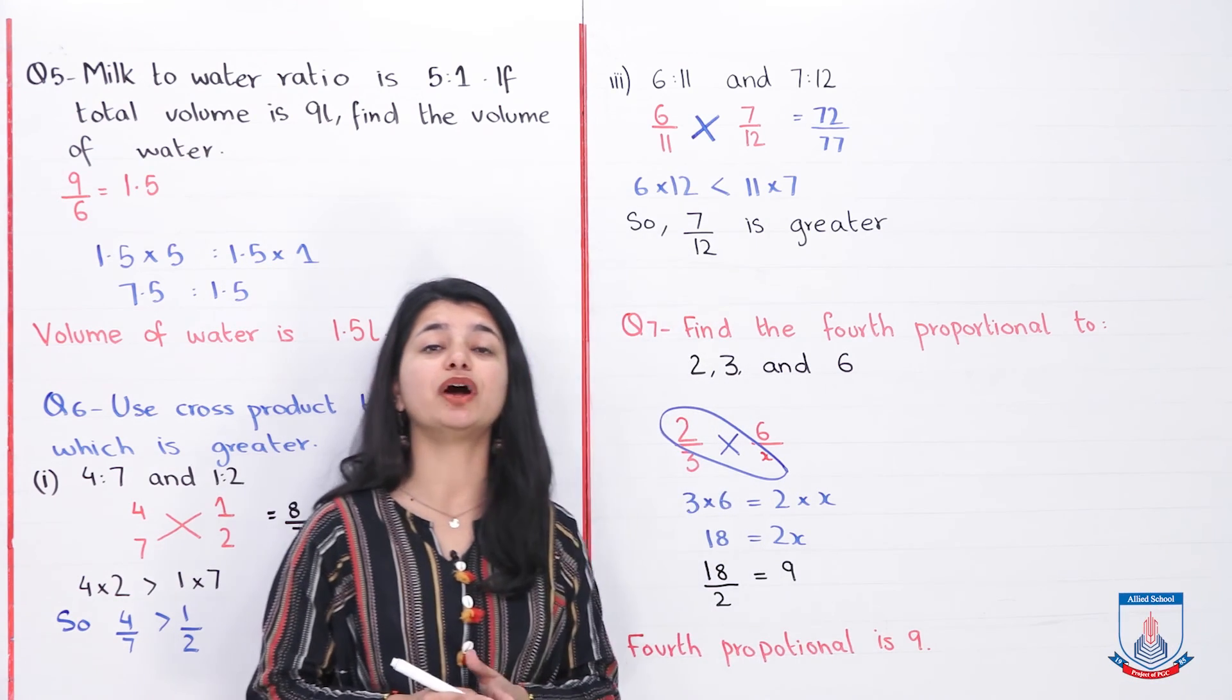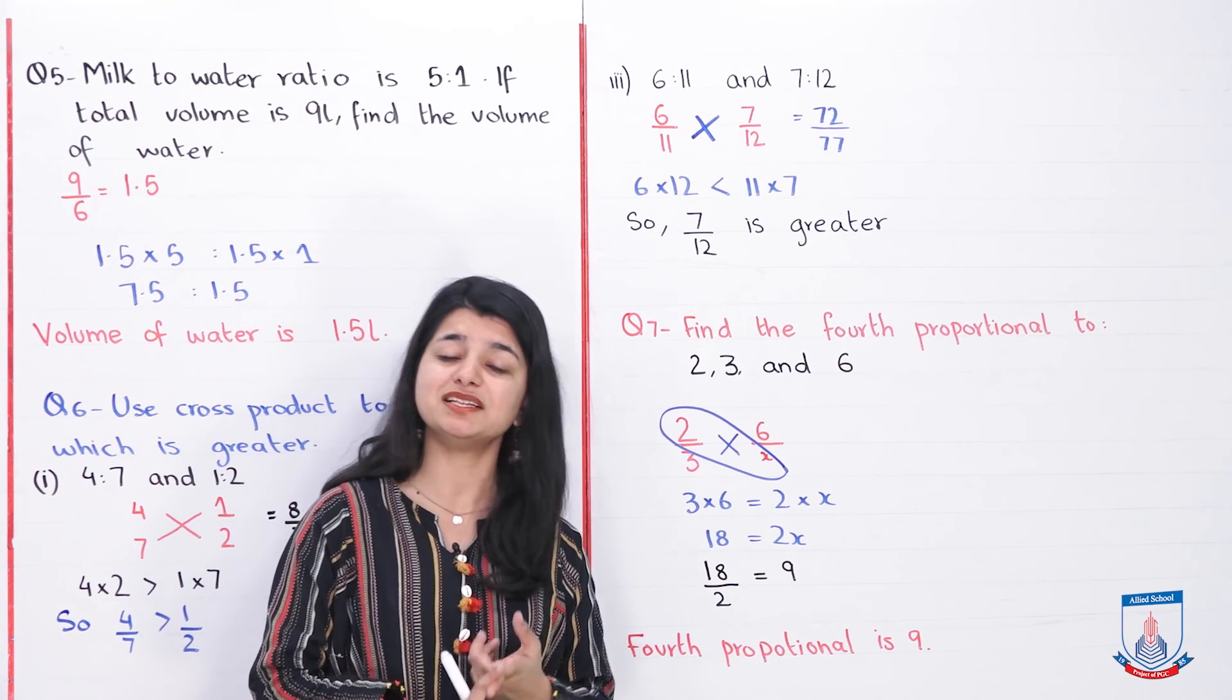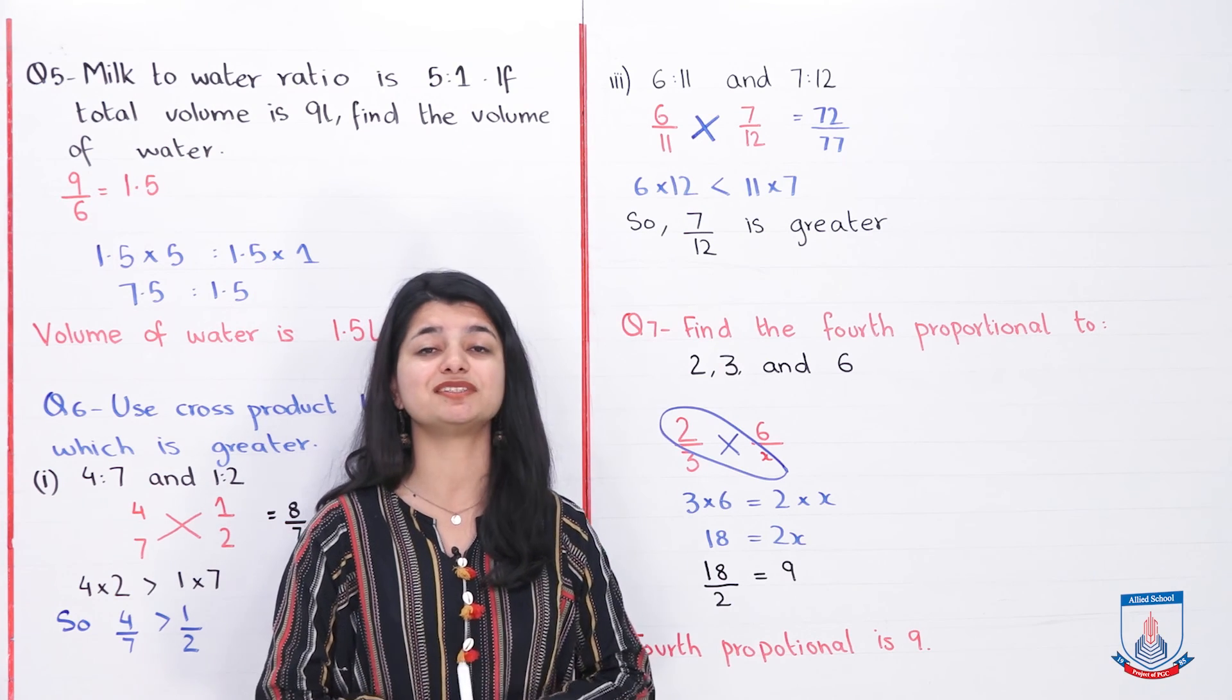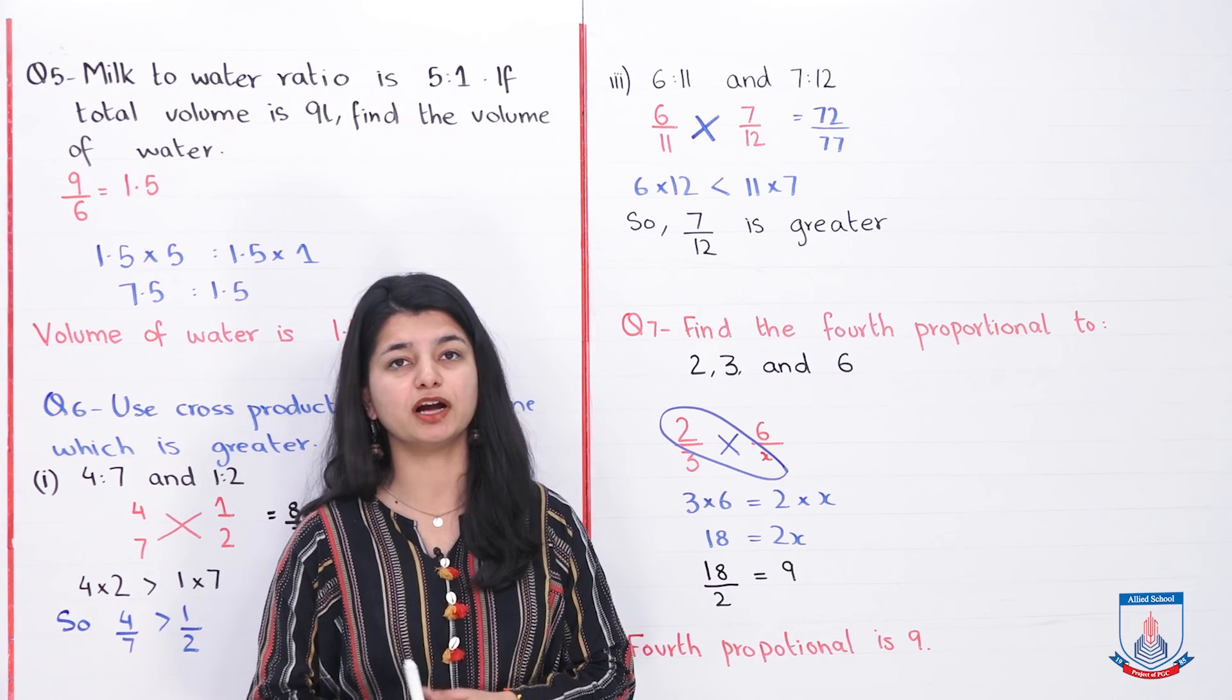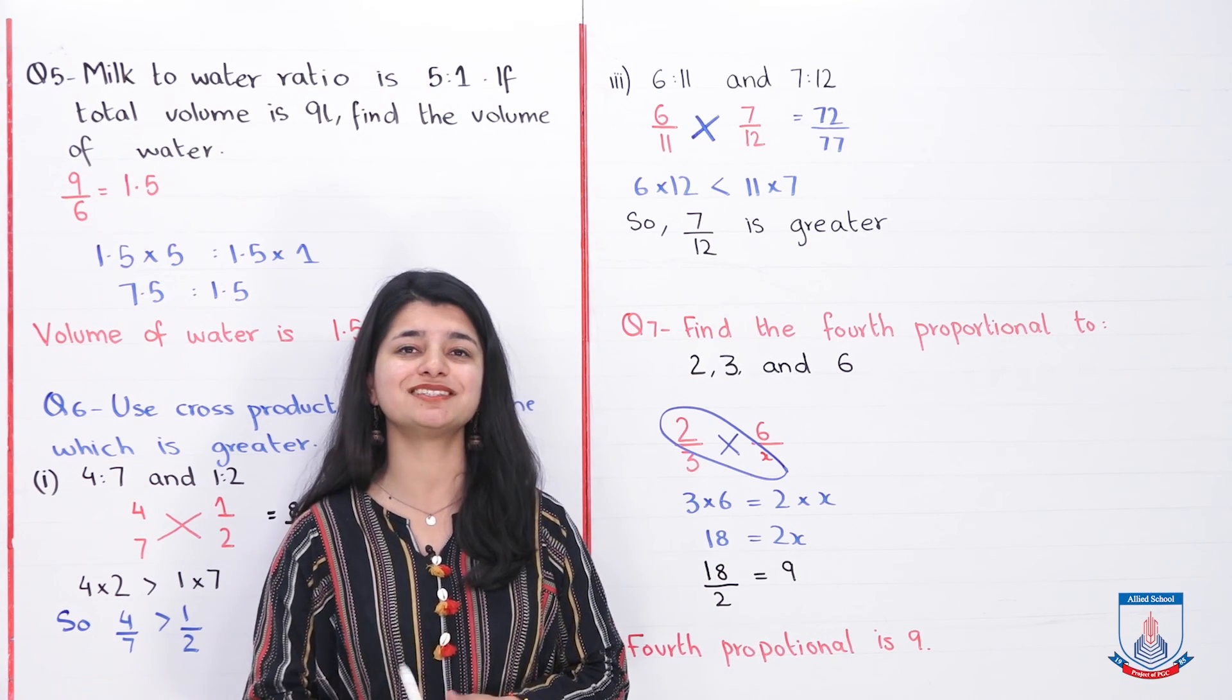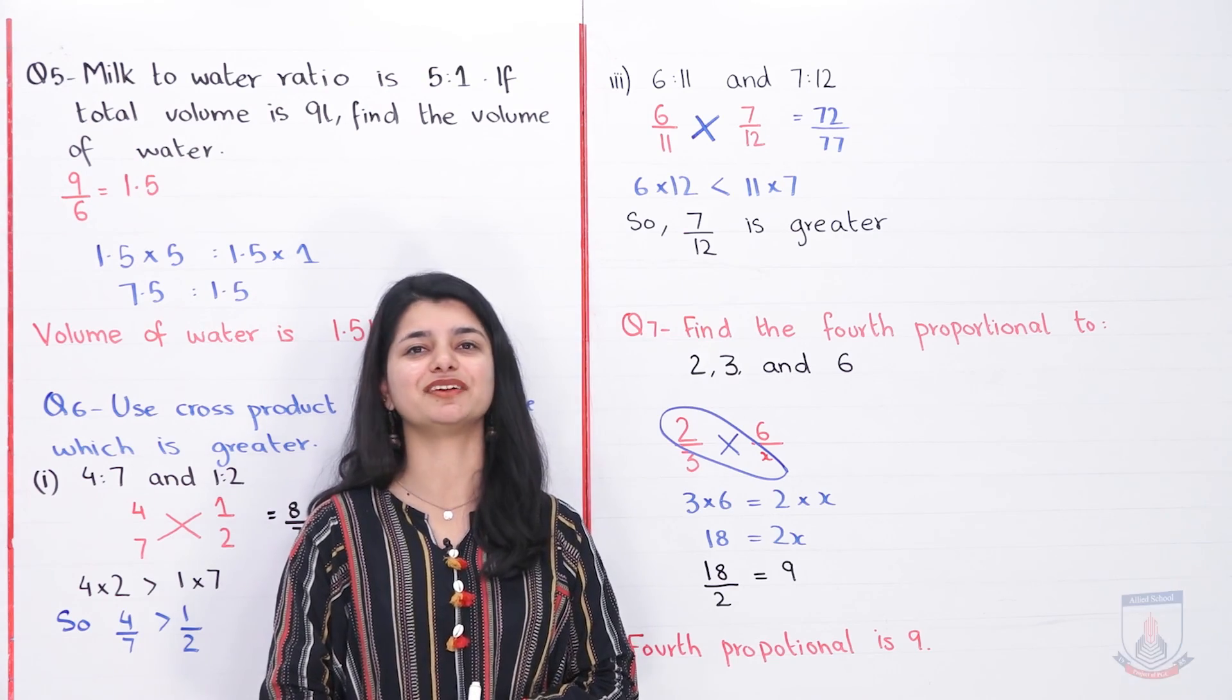I am hoping that you understood how we did this. For this you need to know what means are, what extremes are, fourth proportional, third proportional, continued proportion, what all these things are. We talked about them in the previous lecture. Lecture number 3 of this chapter, in that all of these terms have been explained very well. So do visit that, do complete these questions and I will see you in the next lecture with the remaining questions. Take care, Allah Hafiz.